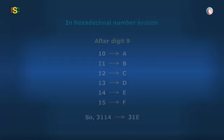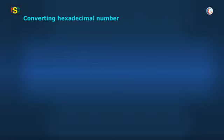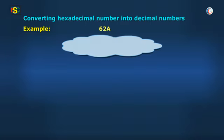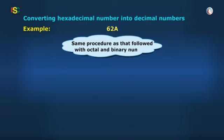Now we will talk about converting hexadecimal numbers into decimal numbers. Let's take the example of a hexadecimal number 62A. We will follow the same procedure as that followed with octal and binary numbers.